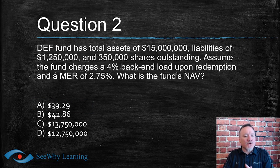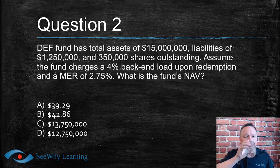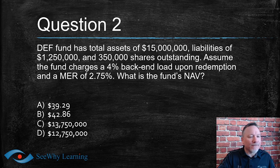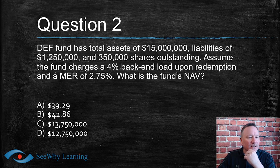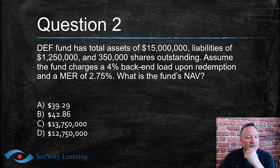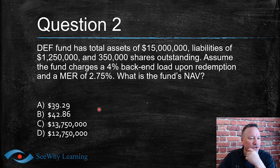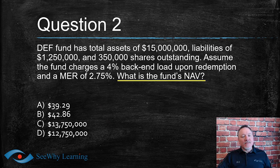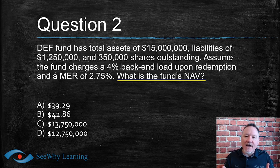Question two: DEF fund has total assets of $15 million, liabilities of $1,250,000, and 350,000 shares outstanding. Assume the fund charges a 4% back-end load upon redemption and an MER of 2.75%. What is the fund's NAV — net asset value? Again we have four choices: two small numbers and two very large numbers.